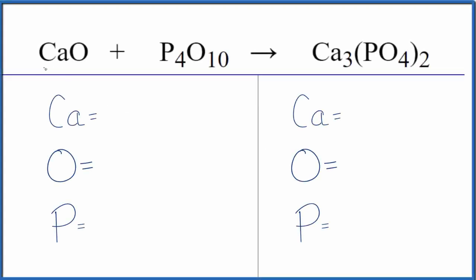If you're asked to balance the equation CaO plus P4O10 — that's calcium oxide plus tetraphosphorus decoxide — here's how you do it.